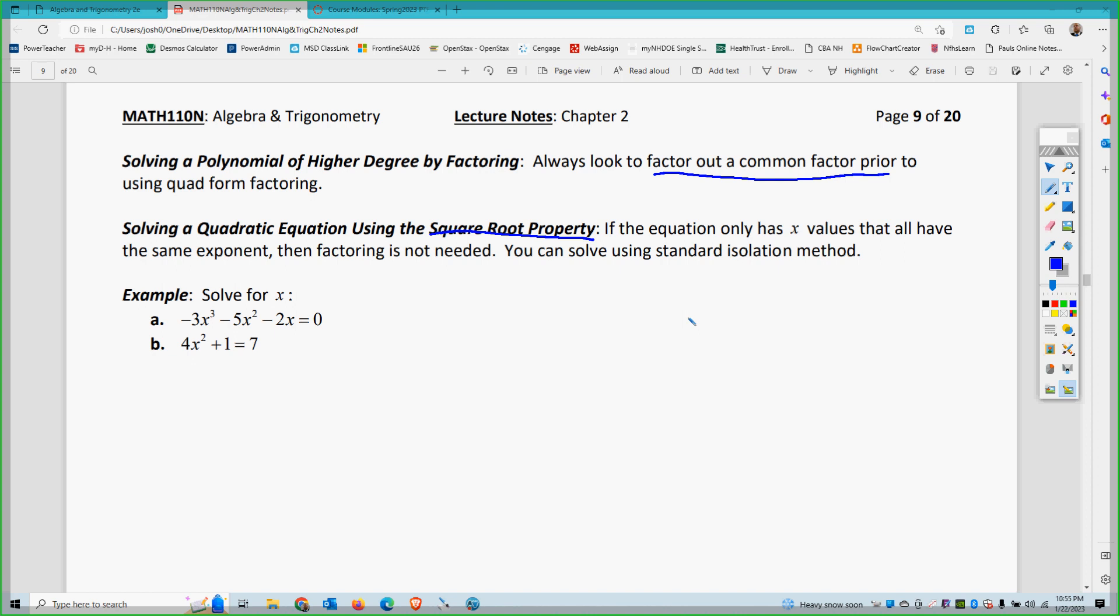And you can also just use the squared properties to solve accordingly and mix that in with the zero product rule. So, for example, always look to factor out first before factoring. So I'm going to factor this one out. I'm going to factor out a negative 1 first. So I'm left with negative 1x, because it has a negative 1 and an x in common here.